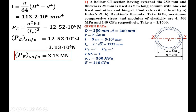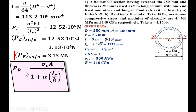Now applying Rankine's formula: P_R = (σ_c × A) / [1 + α(L_E/K)²]. Remember: P_R is in Newtons, σ_c in N/mm², A is cross-sectional area in mm², α = 1/1600 (dimensionless), L_E in mm, and K (radius of gyration) in mm. Unfortunately K is unknown.